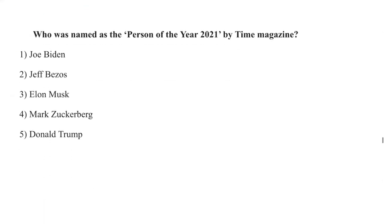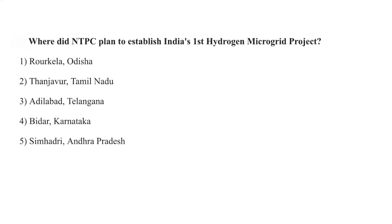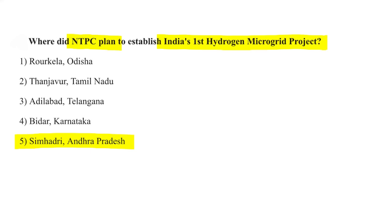Elon Musk was named Person of the Year 2021 by Time Magazine. NTPC plans to establish India's first hydrogen microgrid project in Simhadri, Andhra Pradesh. NTPC's Chairman and Managing Director is Gurdeep Singh, it was established in 1975, and its headquarters is in New Delhi.